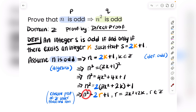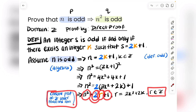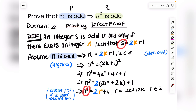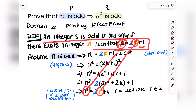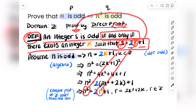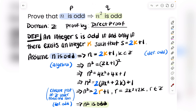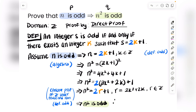Now we have a beautiful result. We have n squared equal to 2r + 1 where r is an integer. By the definition of an odd integer — an integer that equals 2 times another integer plus 1 — n squared is odd. Therefore, if n is odd, then n squared is odd. We finish with a small box to show the proof is complete.